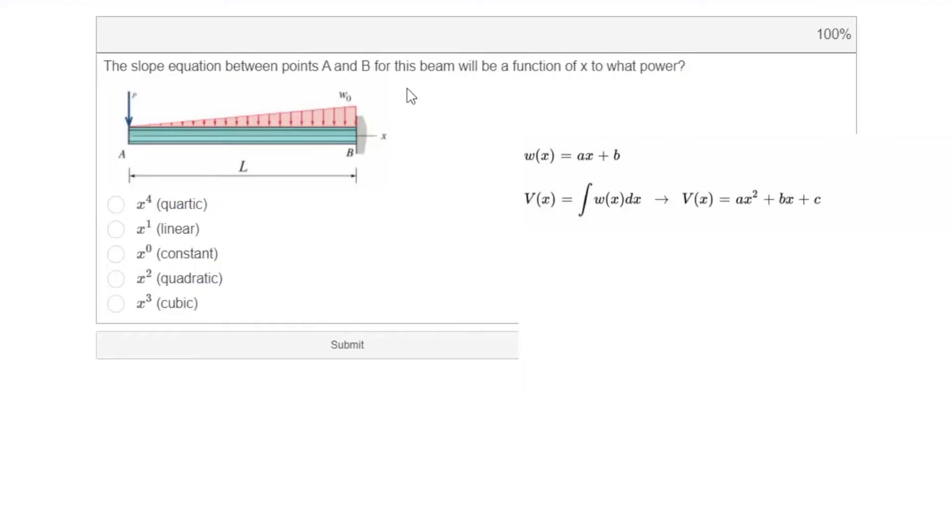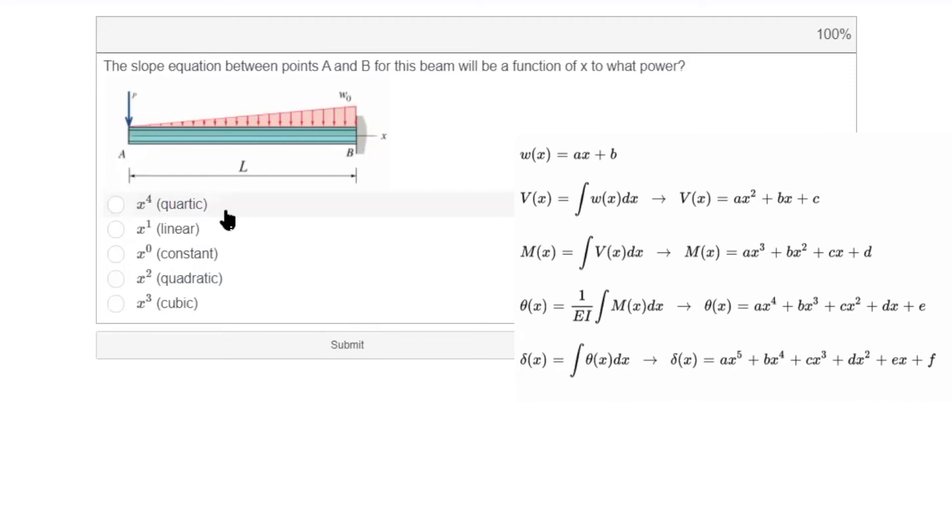Two. What would be the power of moment? Moment is integral of shear. So that would be three. What is the power of slope? Integrate it one more time. That would be four. What would be the power of deformation function, the elastic curve in this case? It would be five because deformation is integral of slope.